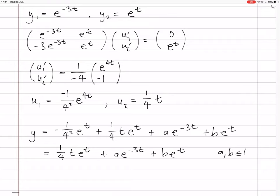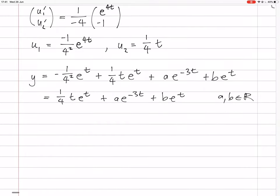Okay, so a, b are any real numbers. I suppose I should be pedantic. I should really call this b something else because it's different from the b in the previous line because it's absorbed -1/16. So let's check this. Now we don't need to check the homogeneous part which is the bit with the constants multiplying it. We just need to check this (1/4)t e^t.